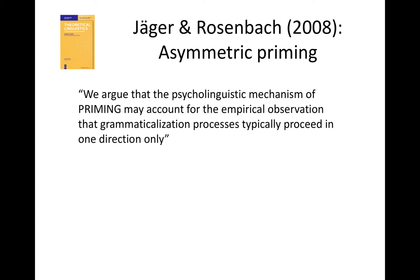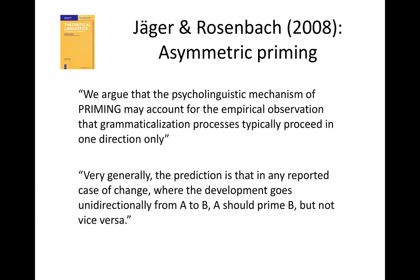This got me excited. They say: 'Very generally, the prediction is that in any reported case of change where the development goes unidirectionally from A to B, A should prime B, but not vice versa.' This is a claim that is really nicely testable.